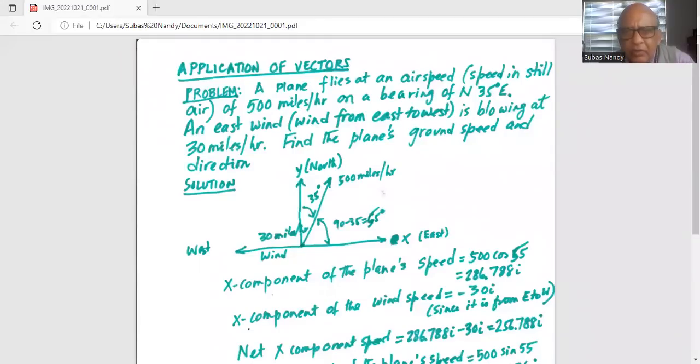A plane flies at an airspeed, speed in still air, of 500 miles per hour on a bearing of north 35 degrees east. An east wind, wind from east to west, is blowing at 30 miles per hour. Find the plane's ground speed and direction.